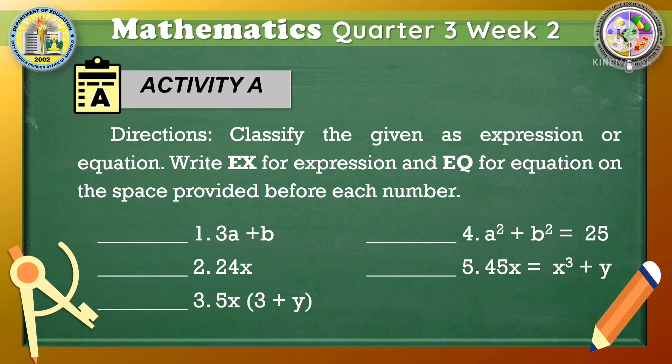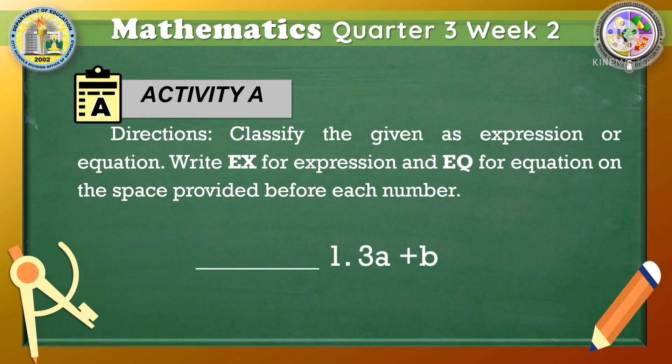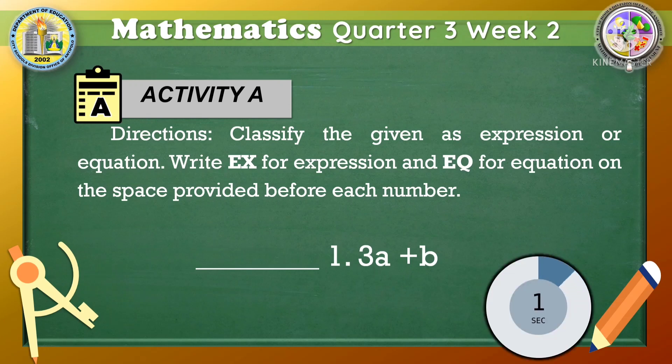I will answer item number 1, then you are going to answer the remaining 4 items afterwards. The first given is 3a plus b. Is it an expression or an equation? Do I write EX or EQ? The correct answer is EX. The given has variable and constant. However, there is no is equal to symbol. Therefore, it is only an expression. Did you get it right? Great job!